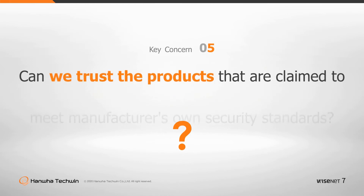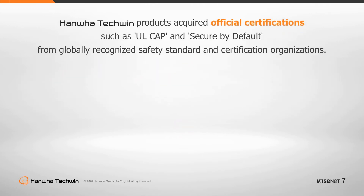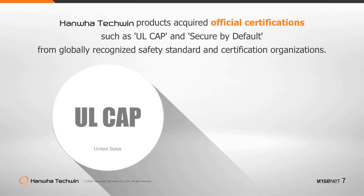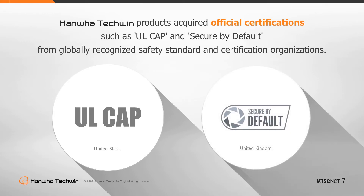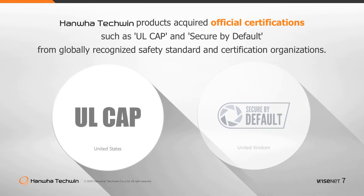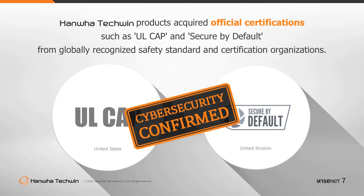Can we trust products that are claimed to meet the manufacturer's own security standards? Customers cannot fully rely on products to be secure against cyber threats if the manufacturer only uses its own security testing or standards for cybersecurity. Hanwha Techwin is officially certified for its overall security processes, proven by the acquisition of the Cybersecurity Assurance Program from UL and secure by default certifications from globally recognized safety standards and certification organizations.